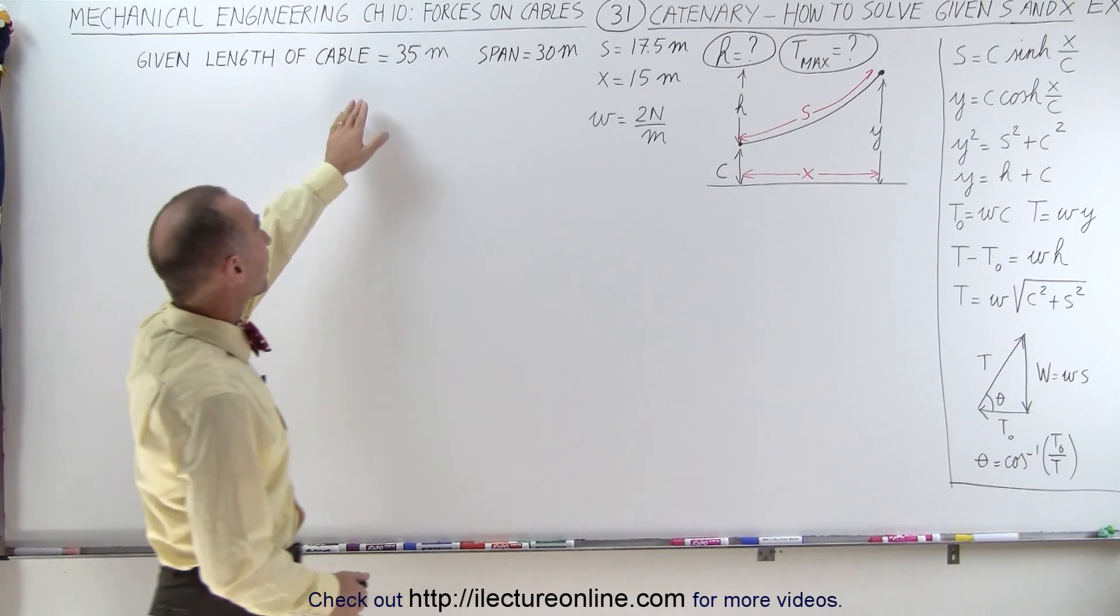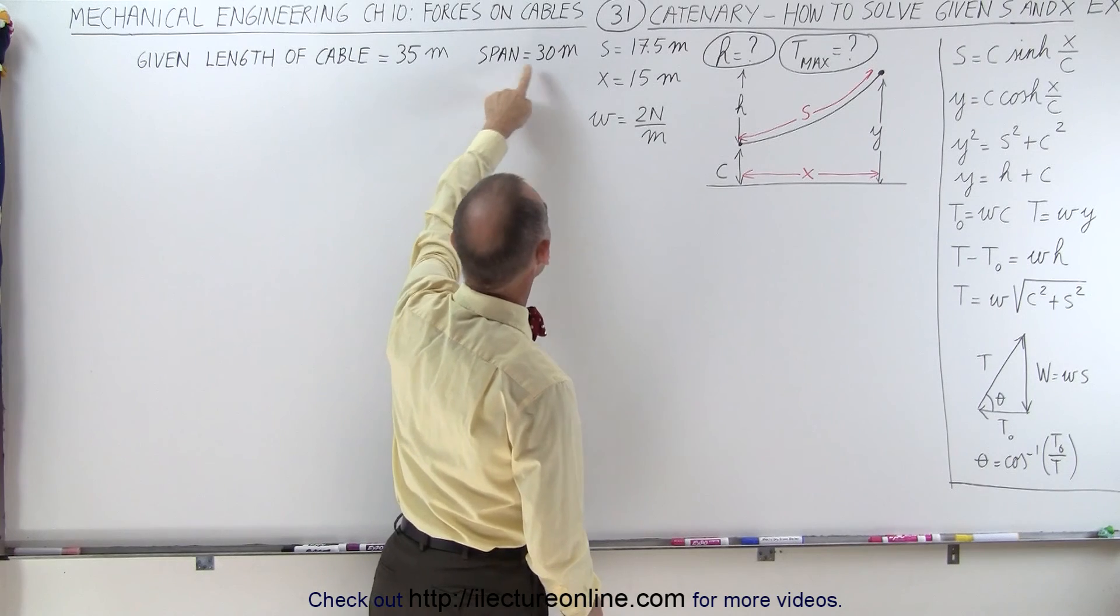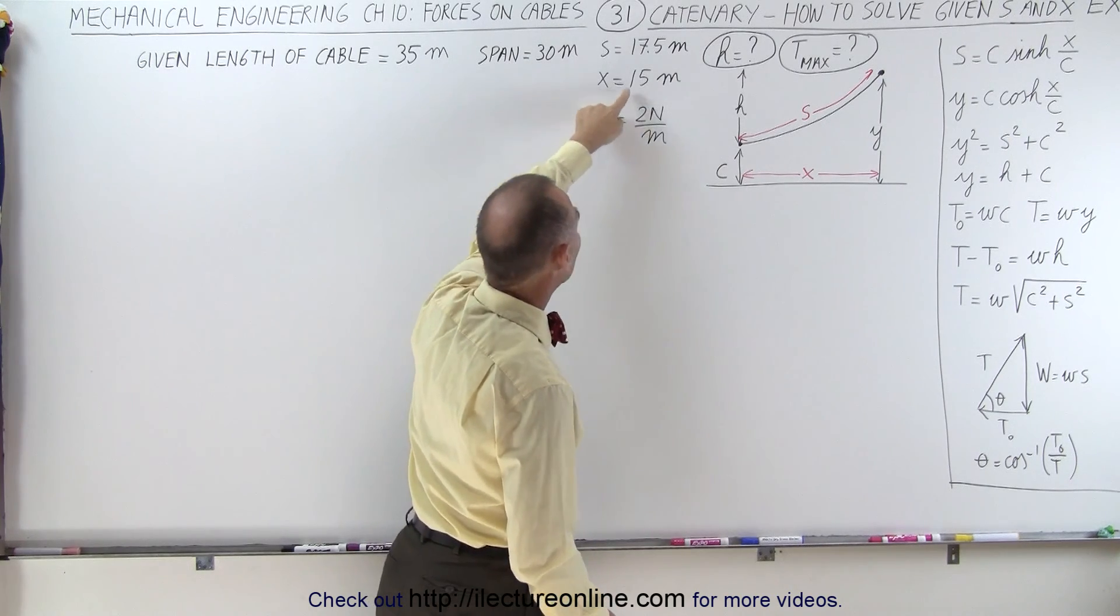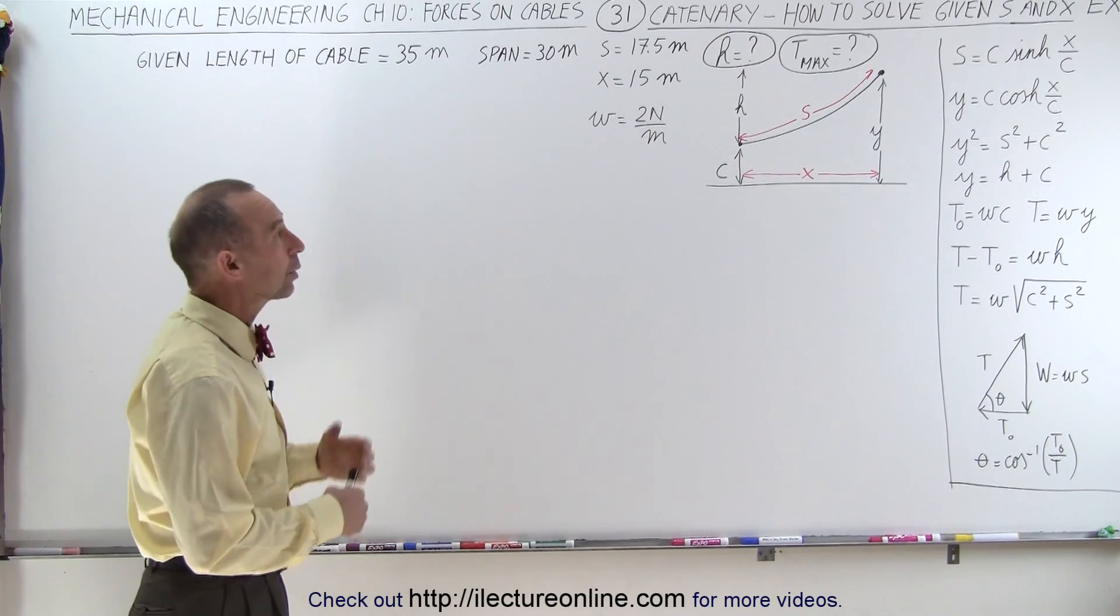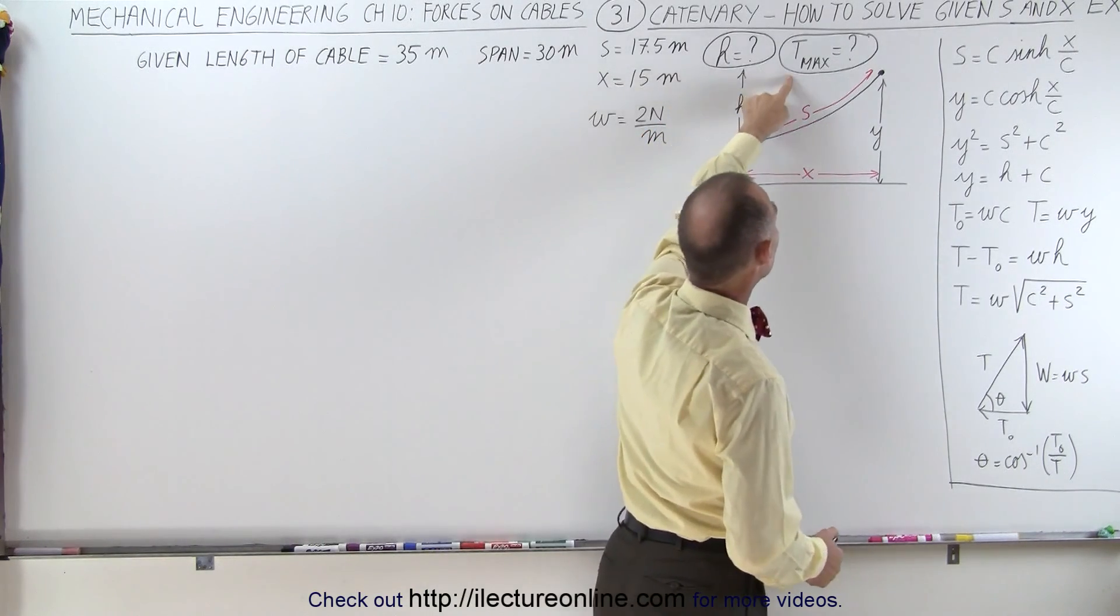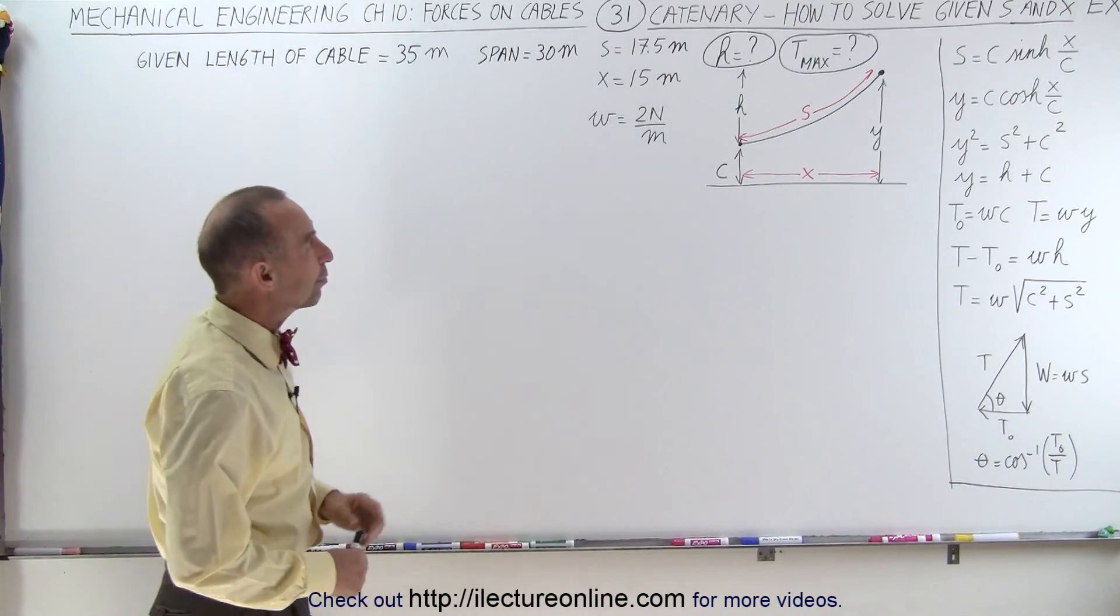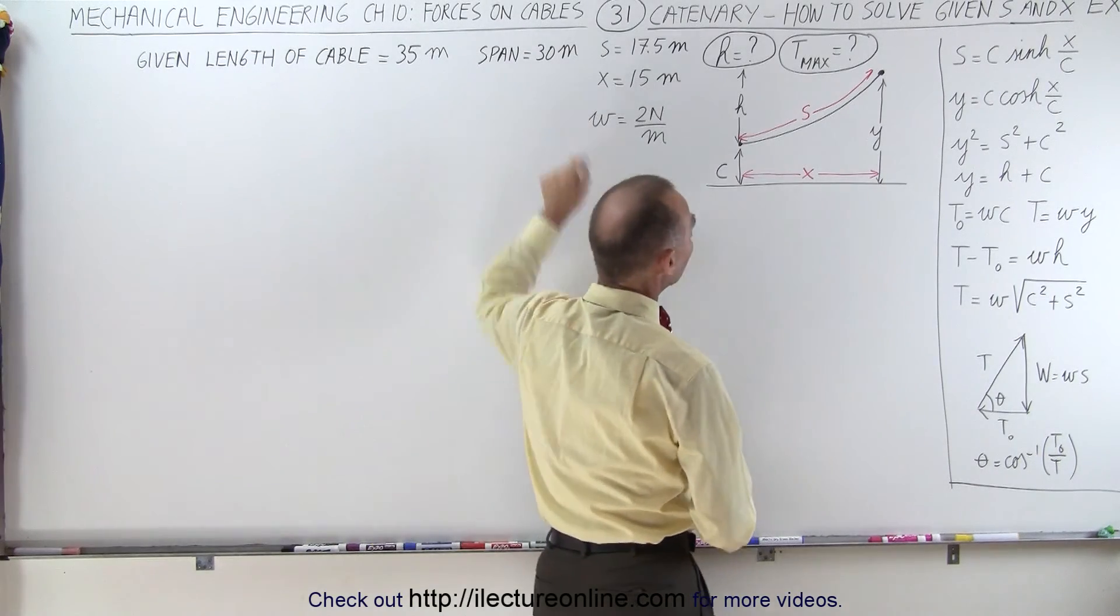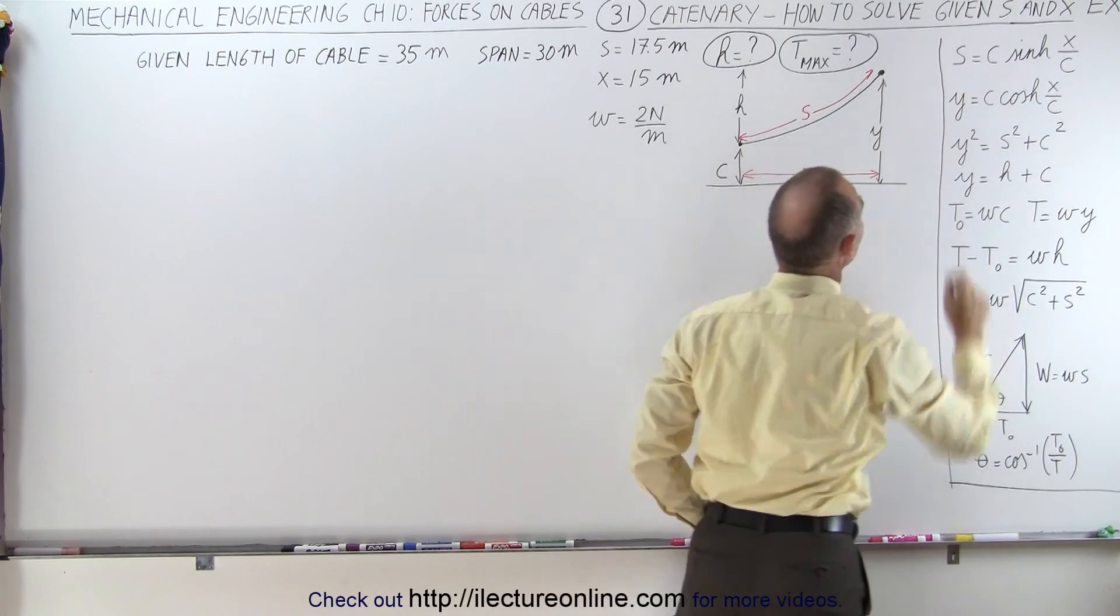If the cable has a length of 35 meters, that means S is 17.5 meters, and if the span is 30 meters, that means X is 15 meters. So given those three variables, how can we find the sag in the cable and the maximum tension at the attach points? If we're given S and X, we can use this equation right here to find C.